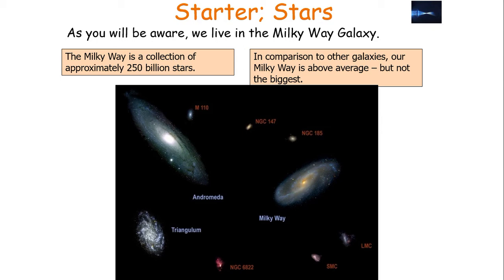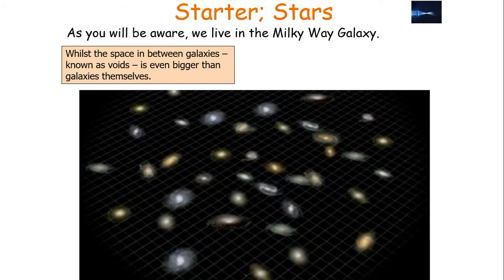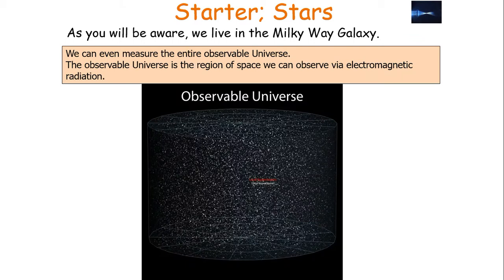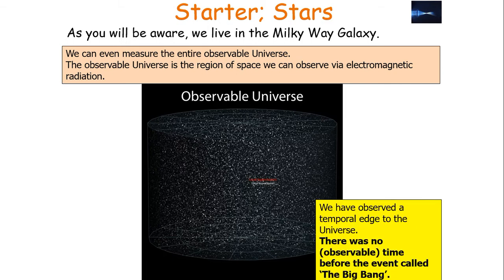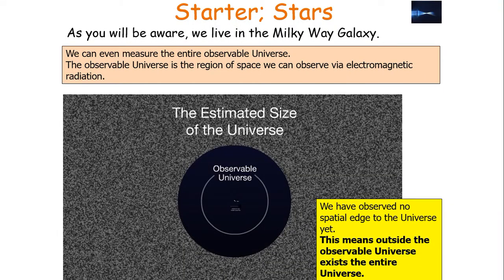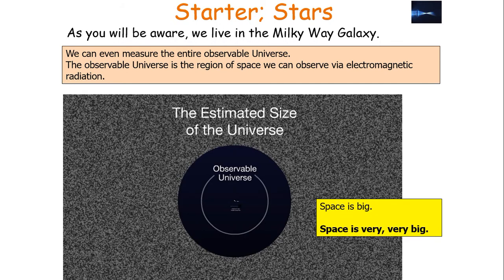In comparison to other galaxies, our Milky Way is an above-average galaxy, but it's not the biggest galaxy. Whilst the space in between galaxies, known as voids, is even bigger than the galaxies themselves. We can even try and measure the entire observable universe, which is the region of space we can observe via electromagnetic radiation, such as visible light. So far, we've observed no spatial edge to the universe. We have, however, observed a temporal edge to the universe, and there was no time which was observable before this temporal edge, so we call the event which produced this the Big Bang. This means outside the observable universe exists the entire universe. To put it bluntly, space is big — it's very, very big.